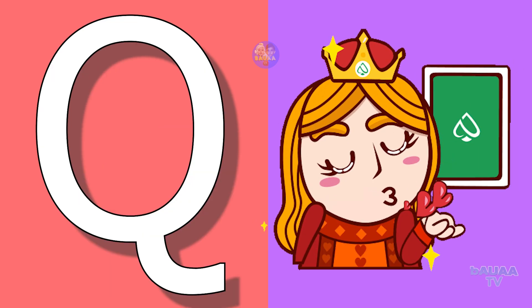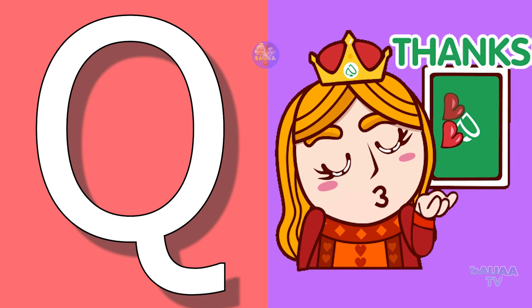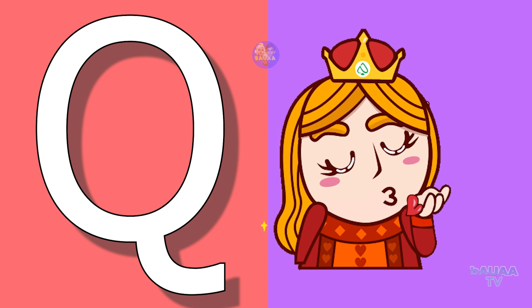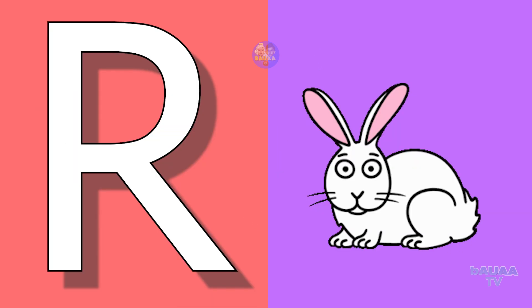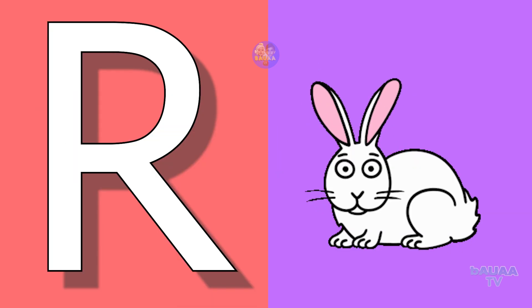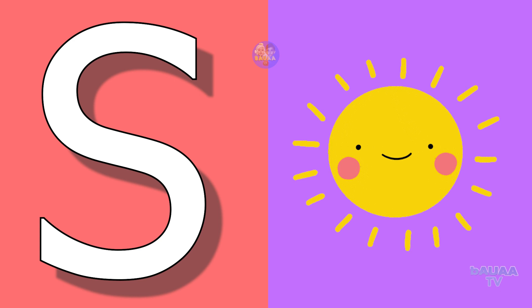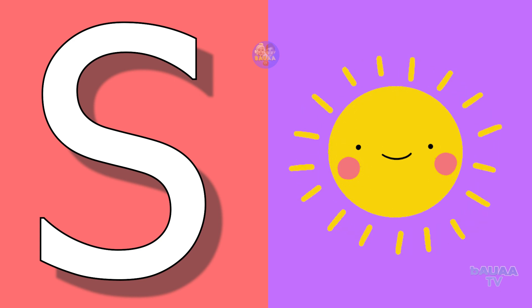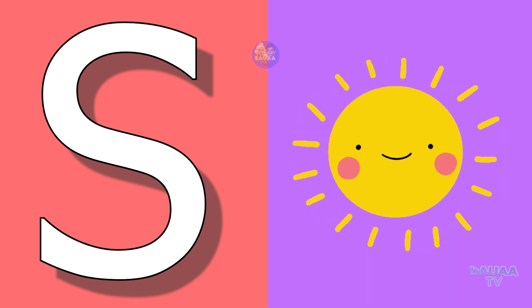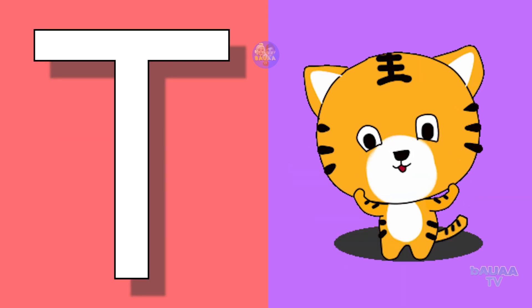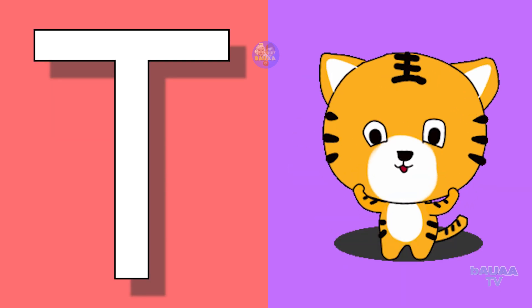Q for queen, queen means rani. R for rabbit, rabbit means kargosh. S for sun, sun means surya. T for tiger, tiger means bagh.